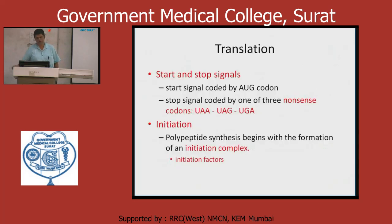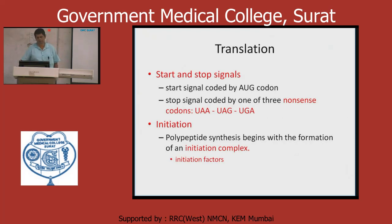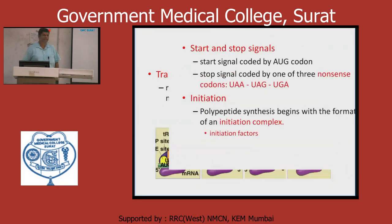In translation there are start codons and stop codons. The start signal is always AUG. Stop codons are UAA, UAG, and UGA. Please note that UGA is also a code for selenocysteine, and UAG is also a code for pyrrolysine.